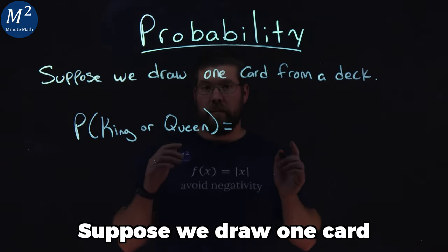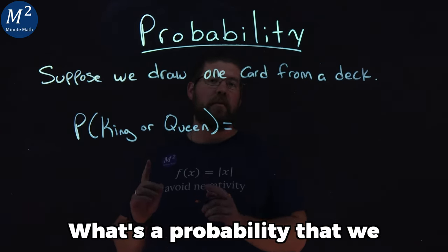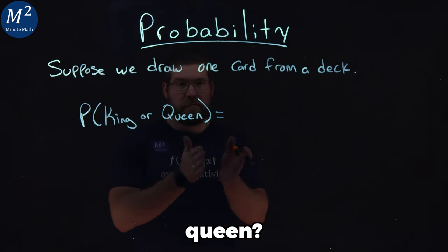Suppose we draw one card from a deck. What's the probability that we have a king or a queen? Let's learn.